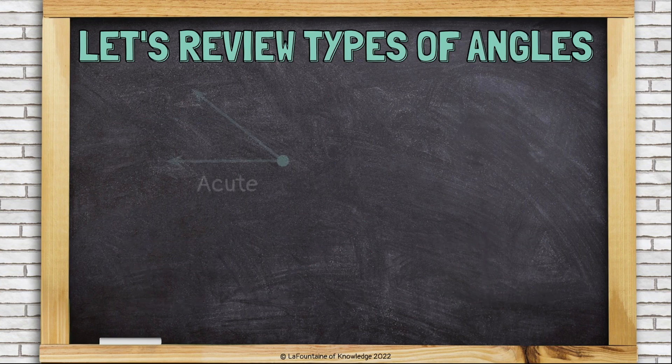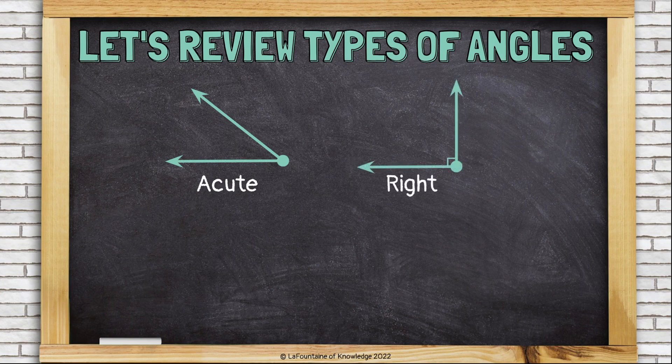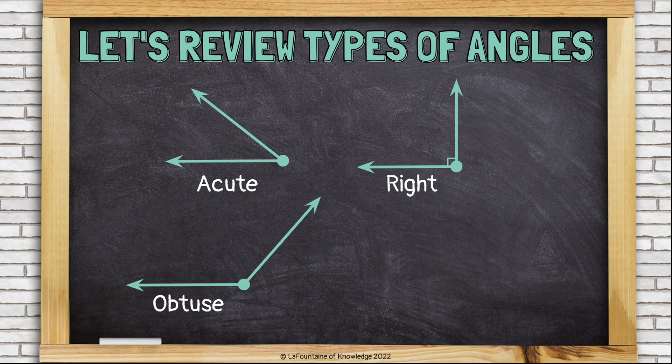Let's review types of angles. Acute, less than 90. Right, exactly 90 degrees. Obtuse is more than 90, but less than 180, because once we hit 180, that's a straight angle.